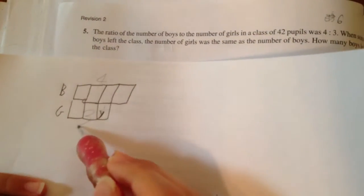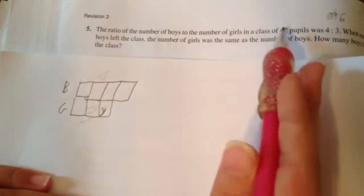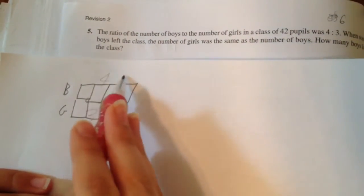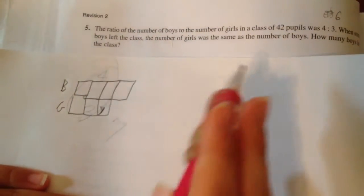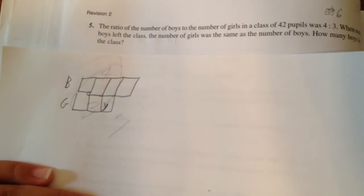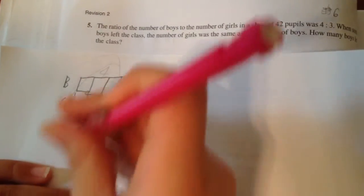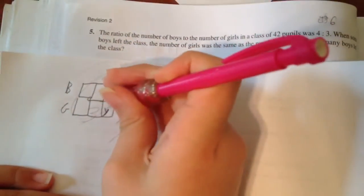For the ratio in the 42 pupil class, we have to add them up to find how many units there are in the class. 7 units for 42 pupils, that means each unit is 6. So Y equals 6.